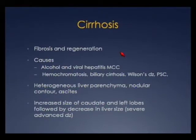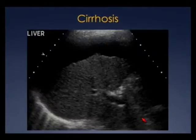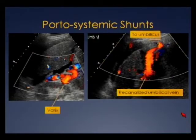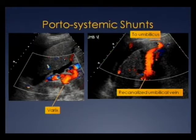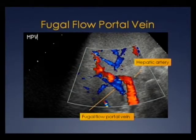Cirrhosis is fibrosis and regeneration of the liver; the most common causes are alcohol and viral hepatitis. In advanced cases we typically see heterogeneous liver parenchyma, nodular contour, and ascites, with increased size of the caudate and left lobes followed by overall decrease in liver size. Here's a nice case of advanced cirrhosis with ascites and nodular, shrunken liver. We can also see vascular complications — varices, recanalized paraumbilical veins, and in one patient, blue representing hepatofugal flow in the portal vein with a dilated hepatic artery from portal hypertension.